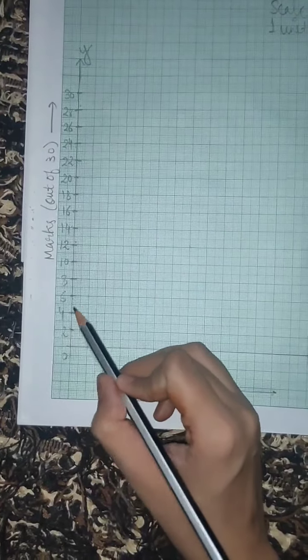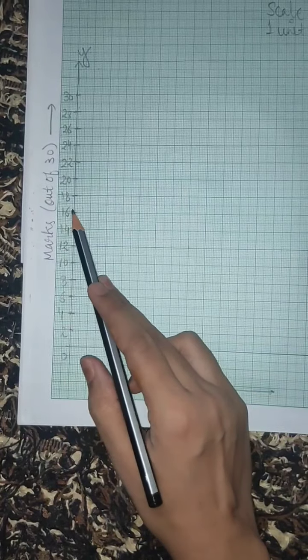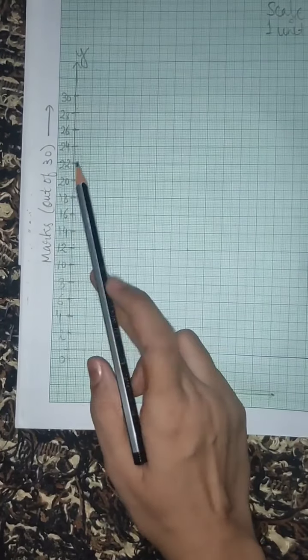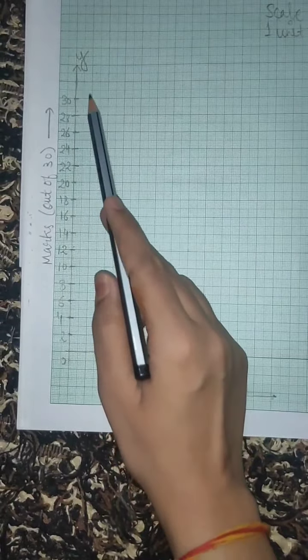I have made scale of 2: 2, 4, 6, 8, 10, 12, 14, 16, 18, 20, then 22, 24, 26, 28, 30. Now I will make bars. How do I make bars?